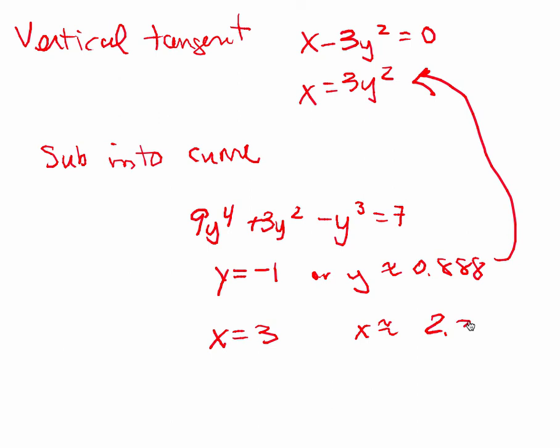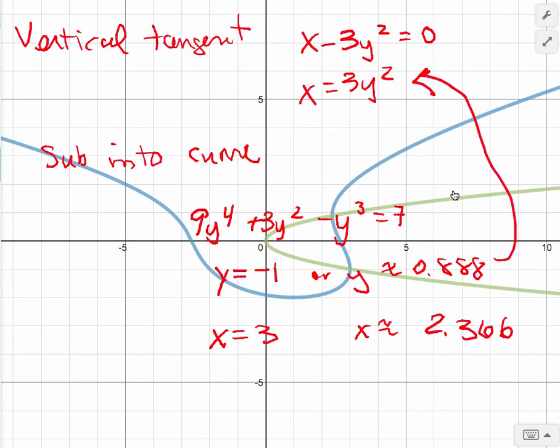Let's bring our graph back up. So the green curve is the parabola x equals 3y squared. And here we look over 3, 1, 2, 3, down 1.